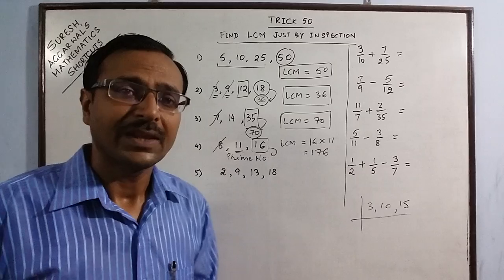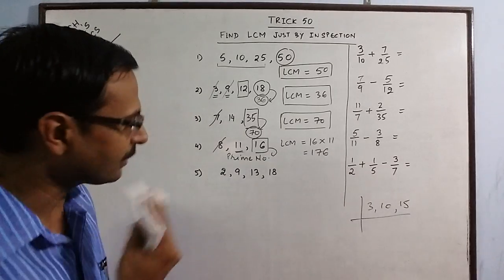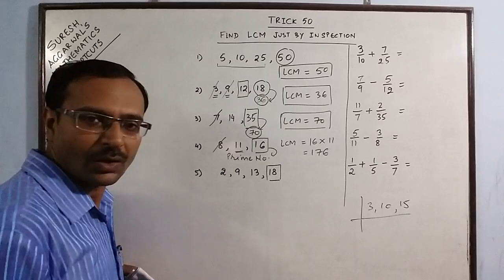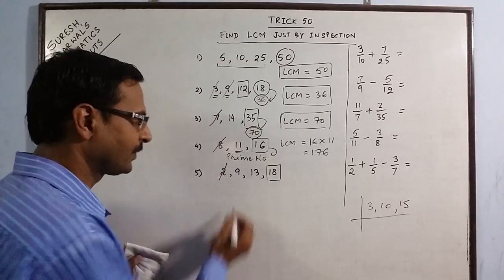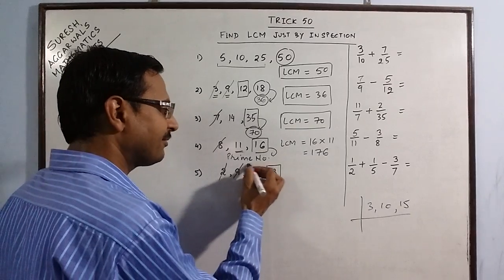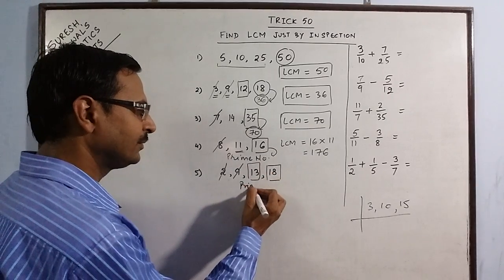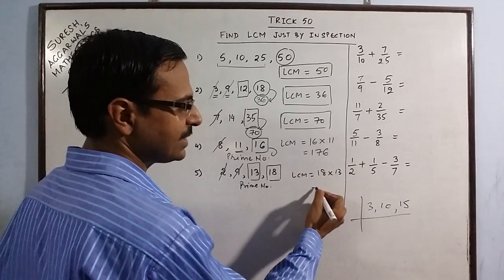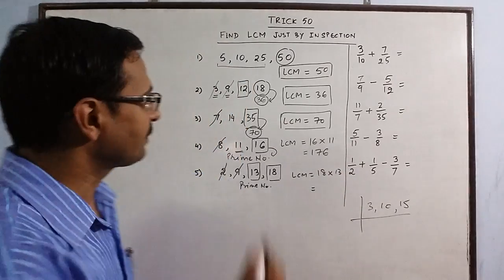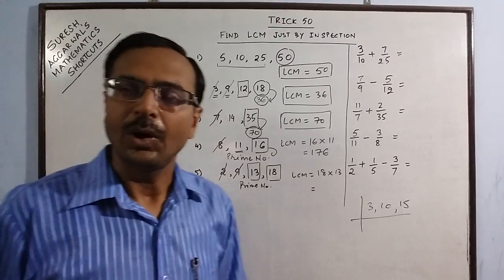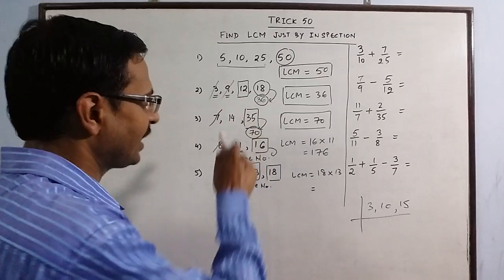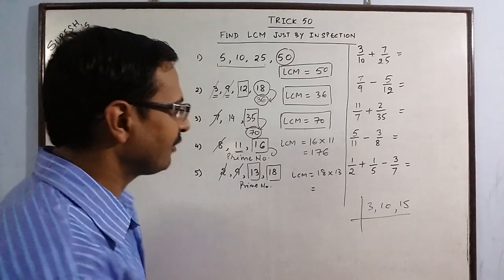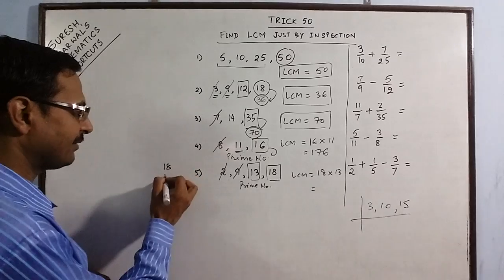In case of prime numbers, the process of finding LCM becomes simpler. Take 2, 9, 13, and 18: the highest number is 18. Both 2 and 9 are divisors of 18. The only number left is 13, which is prime. So we multiply the highest number by the prime: 18 × 13 = 234. This is the process for finding LCM of two, three, or four numbers using basic rules of divisibility just by inspection.